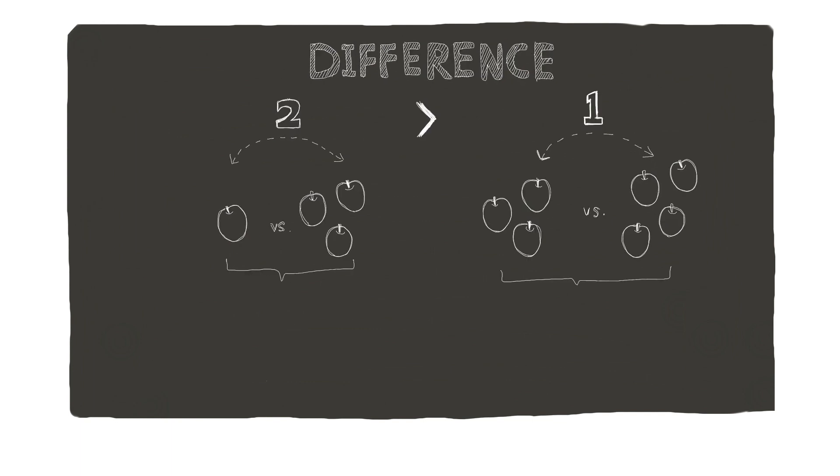Most species performed worse when the total quantity of objects was large and the difference in quantities between the two choices was small.